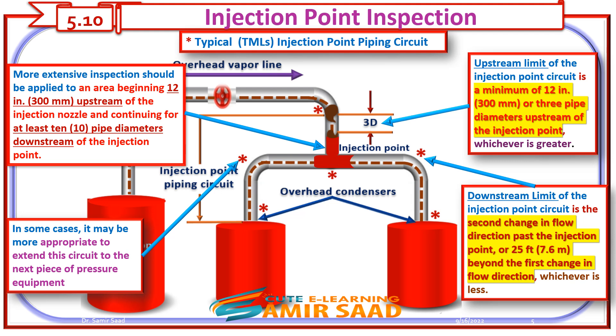More extensive inspection should be applied to an area beginning 12 inches upstream of the Injection Nozzle, and continuing for at least 10 pipe diameters downstream of the Injection Point.